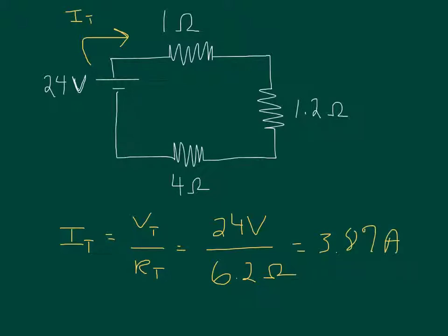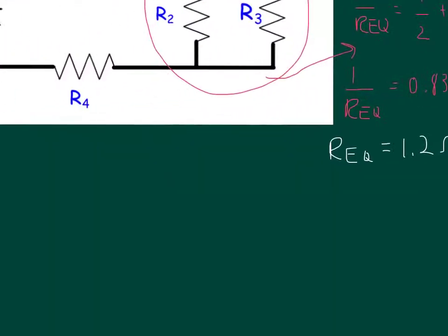To calculate the total circuit current, it's 24 divided by 6.2, which gives us 3.87 amps. There are 3.87 amps coming out of the power supply and going through this resistor. 3.87 amps also goes through this resistor, but remember this resistor replaced R2 and R3. And there is 3.87 amps going through this last resistor. We have a little chart that we fill out. Here's our R1, R2, R3, and R4. So we're going to start filling in this chart.